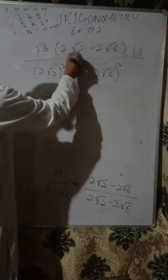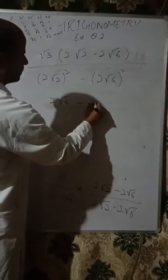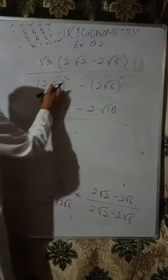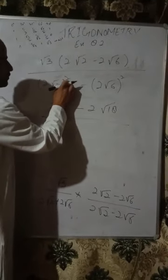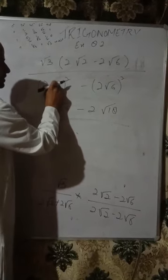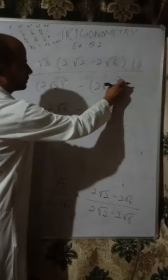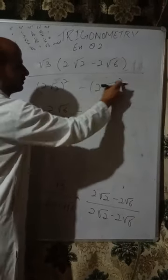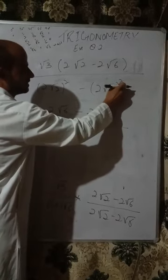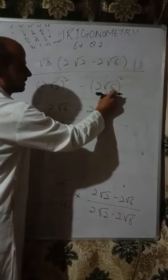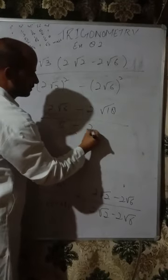In the numerator: √3 times 2√2 gives 2√6, and √3 times 2 gives 2√3. For the denominator: (2√2)² = 4 times 2 = 8, and (2√6)² = 4 times 6 = 24. So denominator is 8 minus 24 = negative 16. Simplifying √18 in the numerator: √18 = √(9×2) = 3√2. So numerator becomes 2√6 minus 2 times 3√2, and dividing by negative 16 gives us (√6 minus 3√2) divided by negative 8.